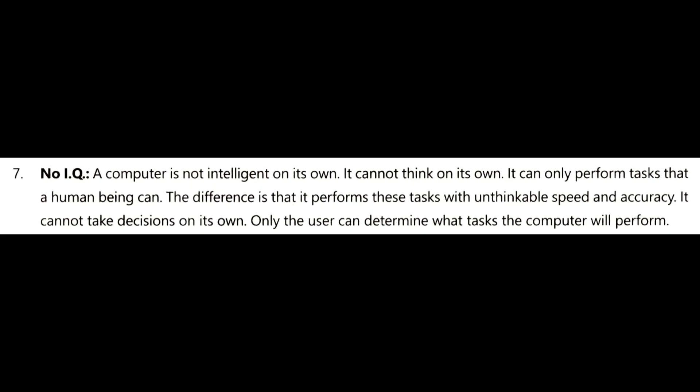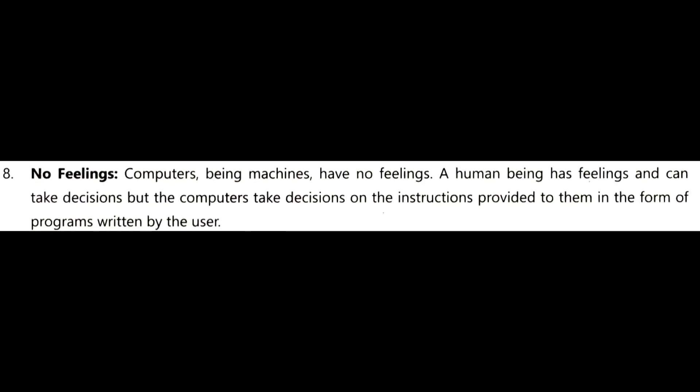Computer systems also have some limitations, such as: computer systems don't have any IQ, they don't have any feeling like humans, and they do not have the ability of thinking. Computer systems do not take any decisions; they perform only those tasks that are determined by the user because they don't have decision-making ability. Since the computer is a machine, it has no hard or soft feeling about anything.